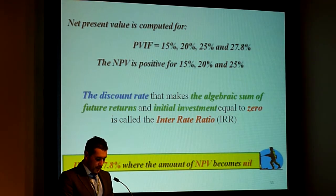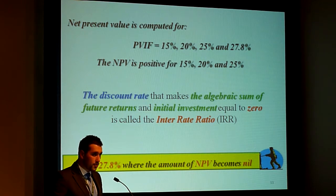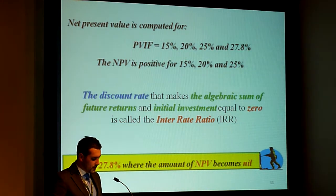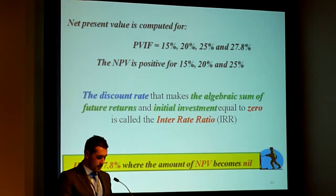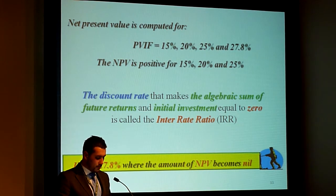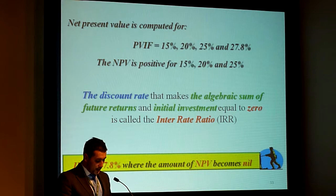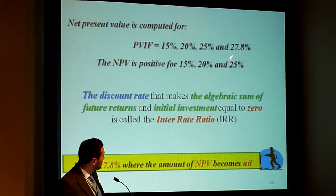NPV here is computed for 15%, 20%, and 25%, and is positive for all three. We have used the modified internal rate of return (MIRR) in order to assess the viability of the operations of the NICDI Code. When MIRR is 27.8, the NPV becomes 0, hence the use of 27.8 here.